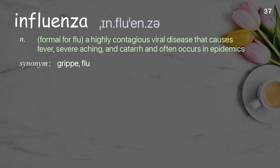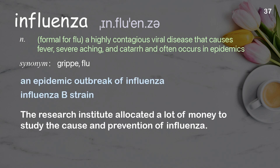Influenza: Formal for flu. A highly contagious viral disease that causes fever, severe aching, and catarrh and often occurs in epidemics. Examples: An epidemic outbreak of influenza. Influenza B strain. The research institute allocated a lot of money to study the cause and prevention of influenza.